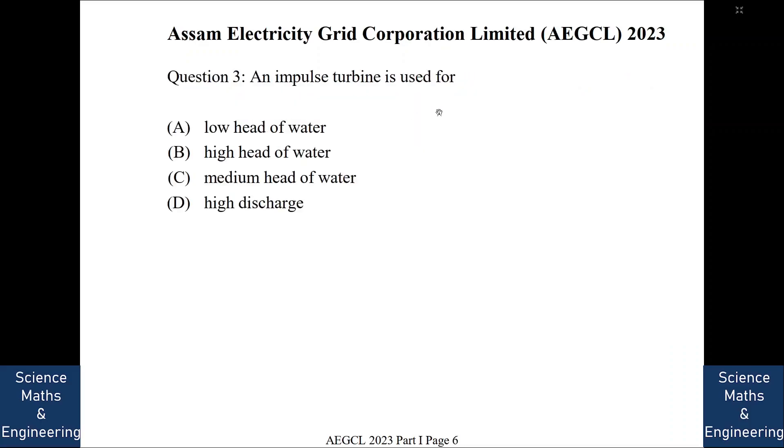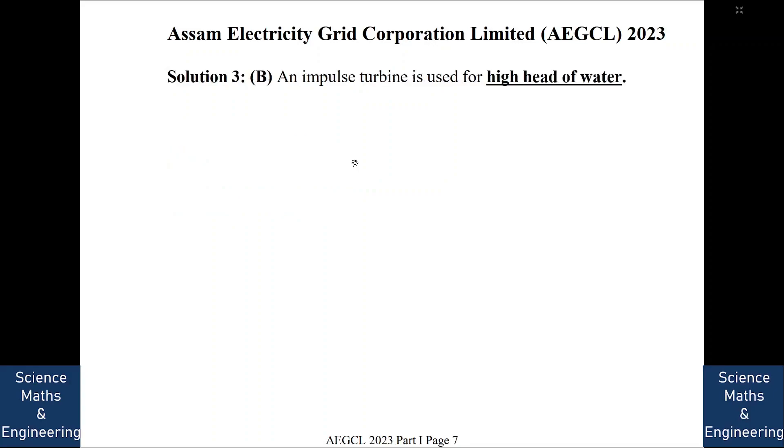An impulse turbine is used for low head of water, high head of water, medium head of water or high discharge. So an impulse turbine is used for high head of water. So we will go to the next question.